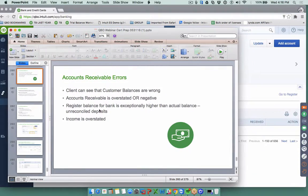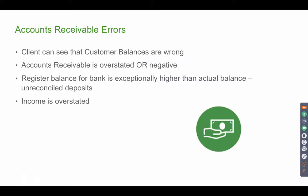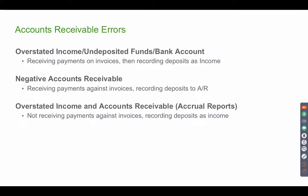That is how we fix typical accounts receivable errors. Most of the time it's because people don't understand bank feeds or downloading, and all those deposits go straight into an income account, which doubles your income and keeps your accounts receivable overstated — it is a mess. The three types of AR errors are: overstated income, overstated Undeposited Funds — where the client received the payment on the invoice but didn't match it with the bank deposit and went straight to income.